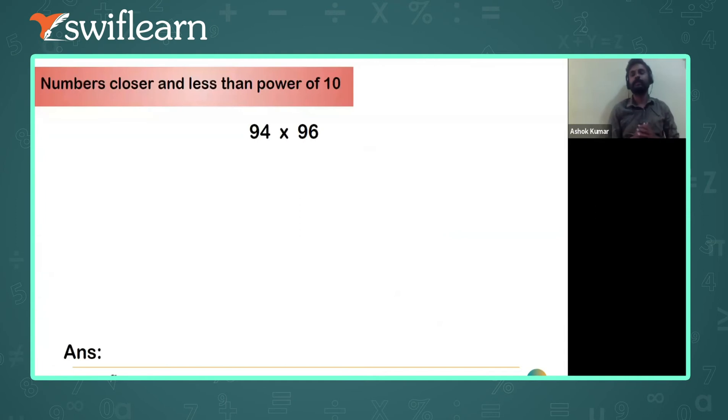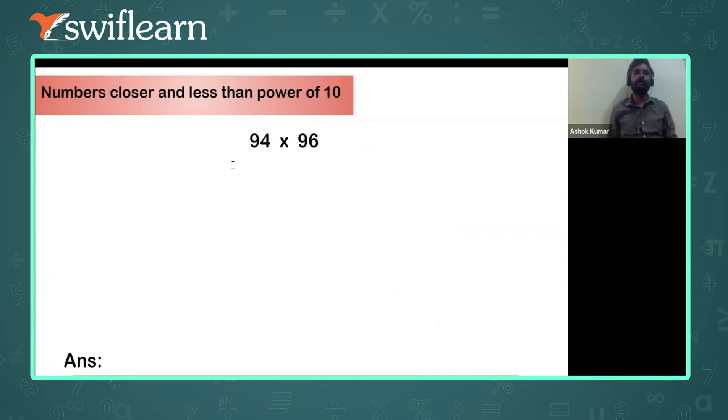Now here you can closely observe the problem very carefully. So here they have given the problem as 94 into 96. Here there are three important steps which you have to follow.